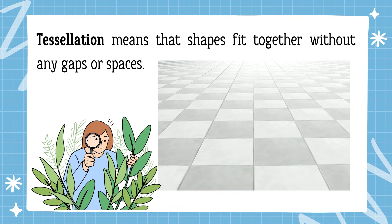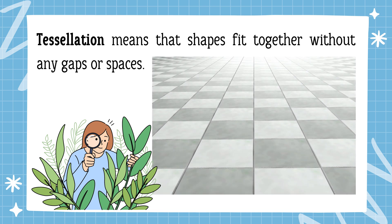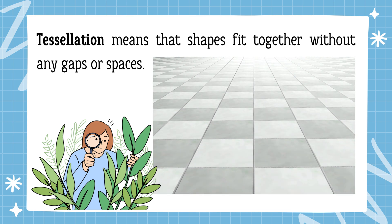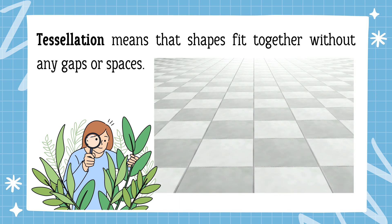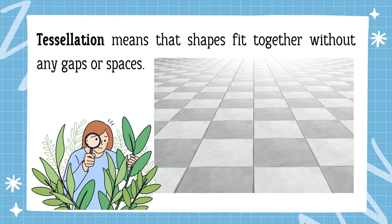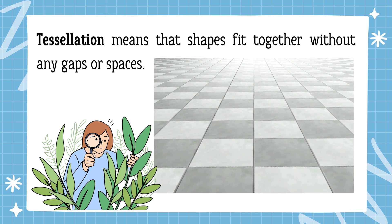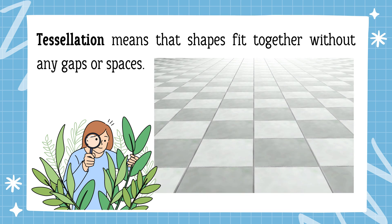Now, let's learn about a new word: tessellation. Tessellation means that shapes fit together without any gaps or spaces. Here is an example. Look at these tiles on the floor — they are squares and they fit together perfectly without any space in between. That's a tessellation.